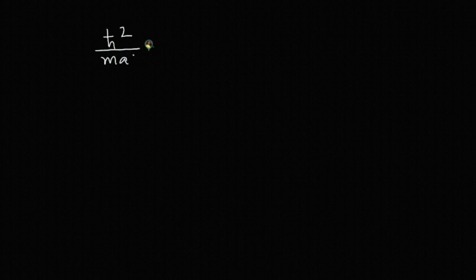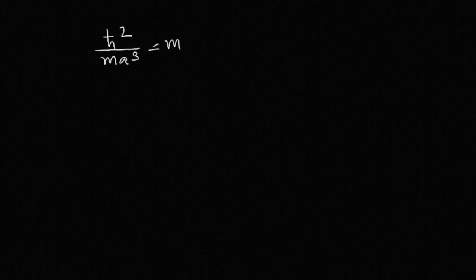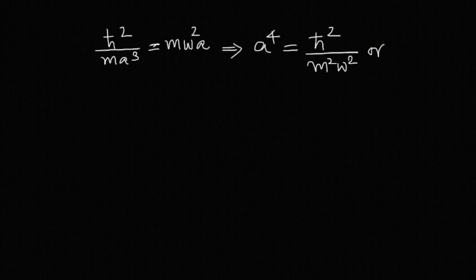From the minimization condition, ℏ²/ma³ = mω²a. This implies a⁴ = ℏ²/m²ω². Taking the square root, we get a² = ℏ/mω. This is an important result — let's call it equation 7.